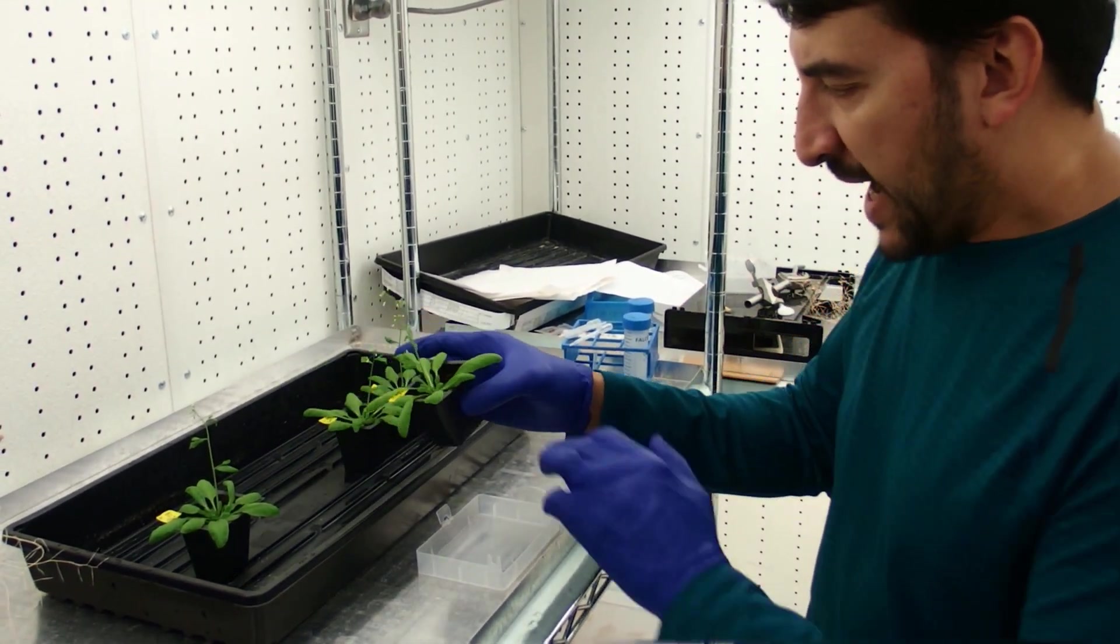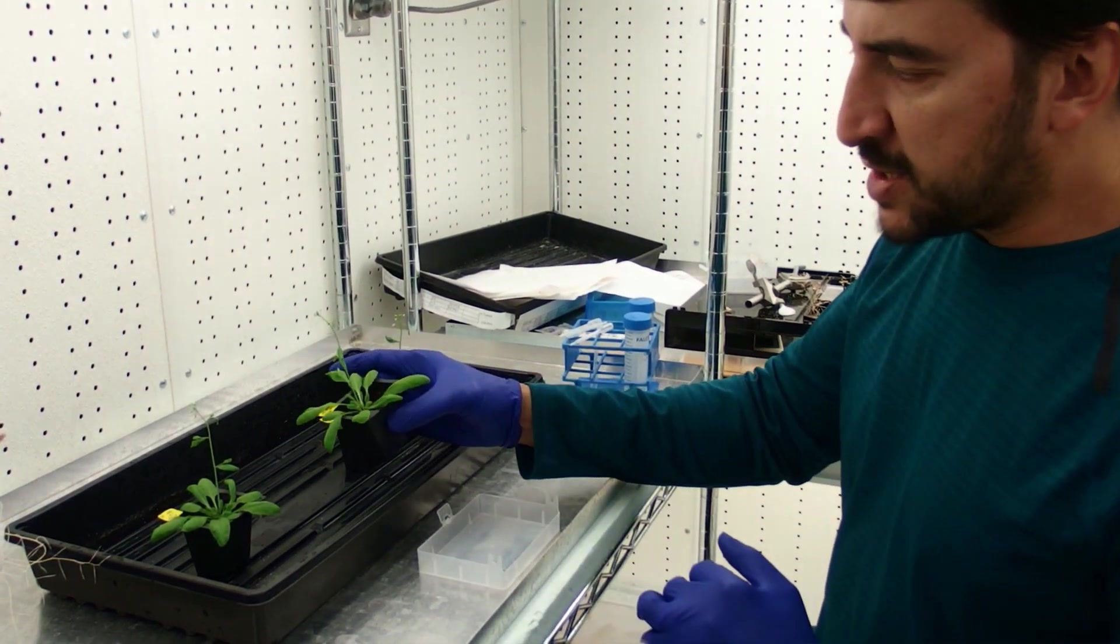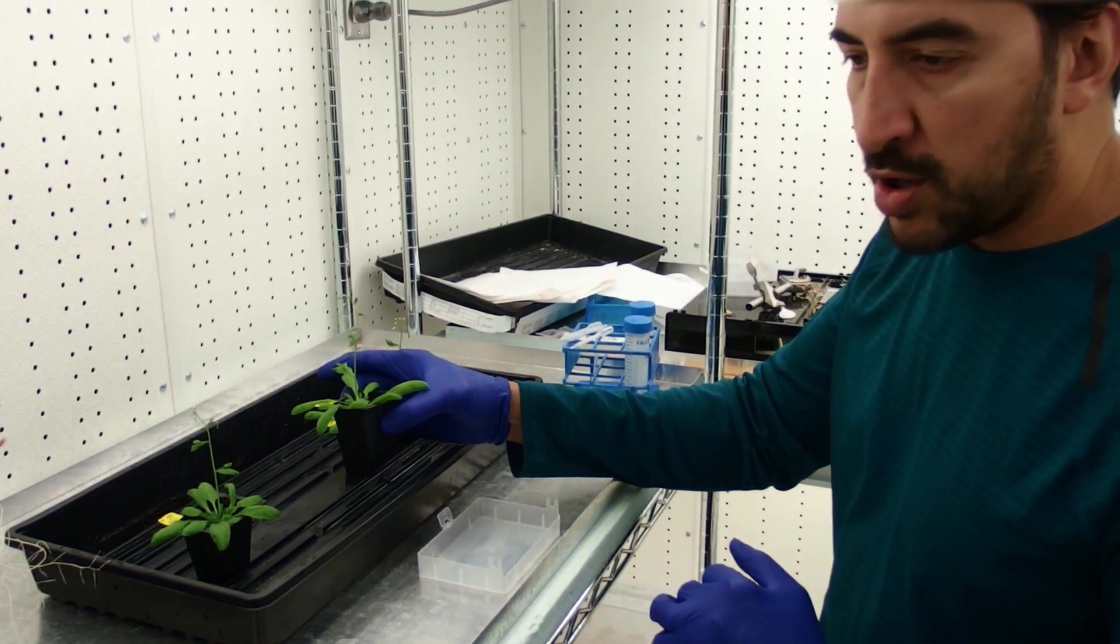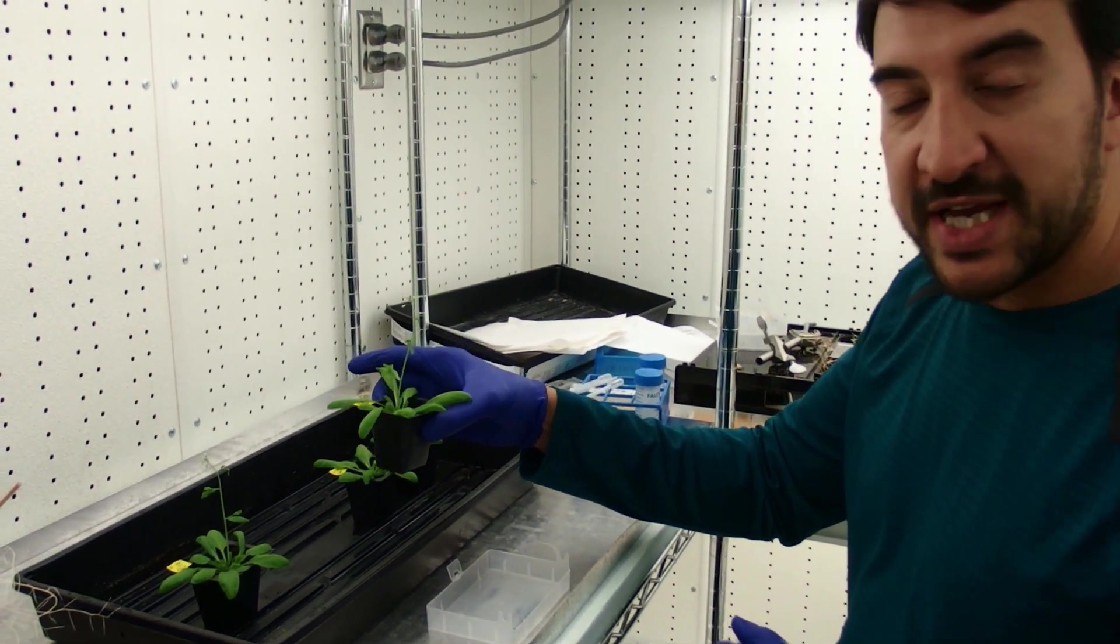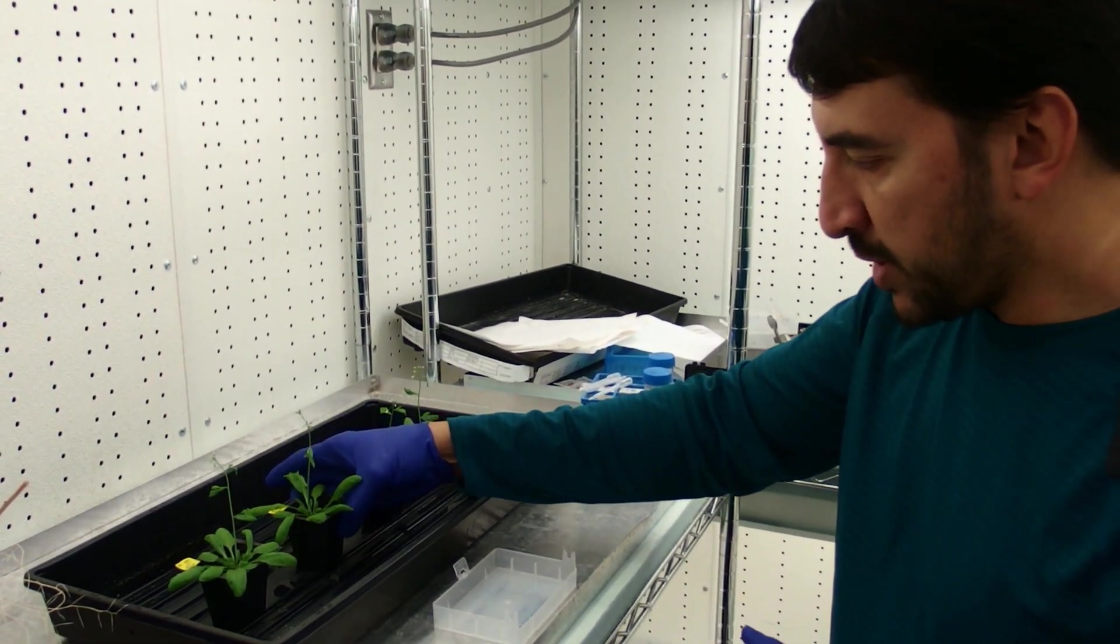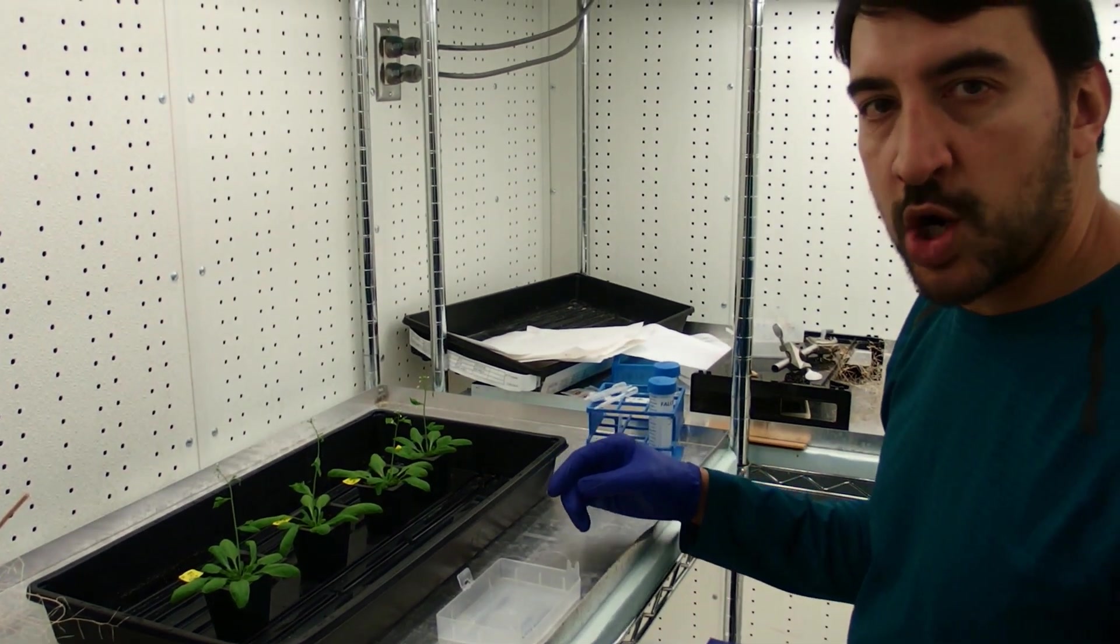They look nice and healthy. And their inflorescences are between 2 and 10cm tall, which is the optimal height for transgenic plants, according to the paper published by Bent and Clough.